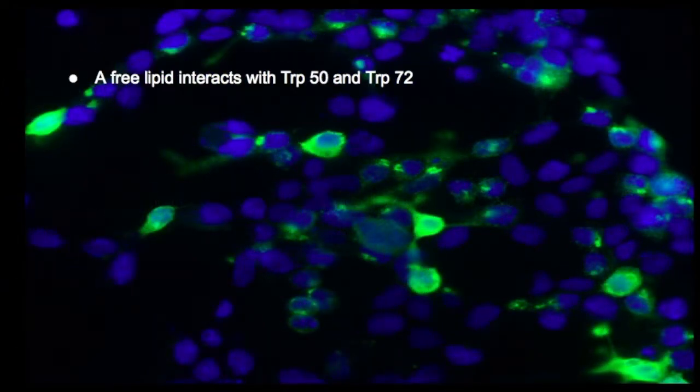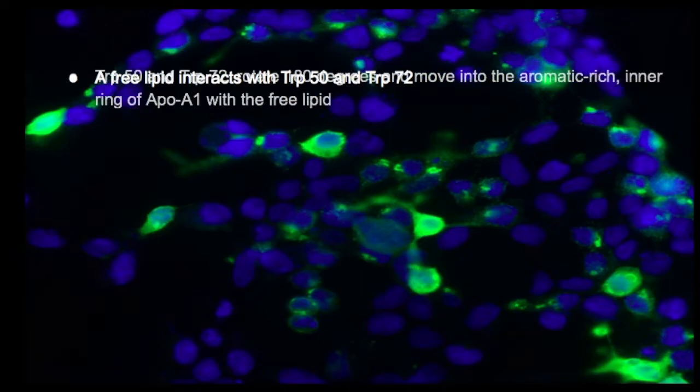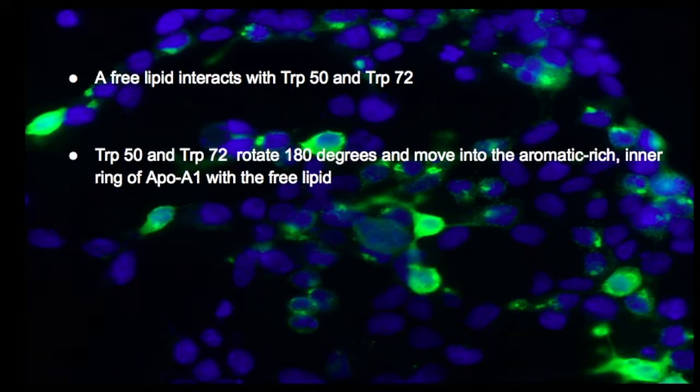First, four copies of tryptophan 50 and tryptophan 72 that were initially located on the outer ring make a 180-degree rotation towards the center of the structure. In this way, it disrupts the aromatic packing of the inner ring and destabilizes the unbound form of ApoA1.